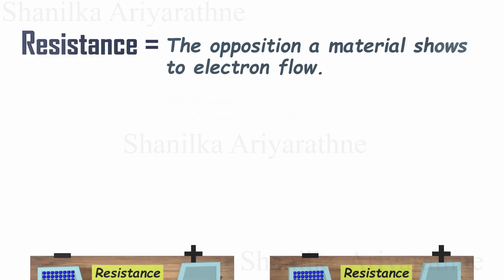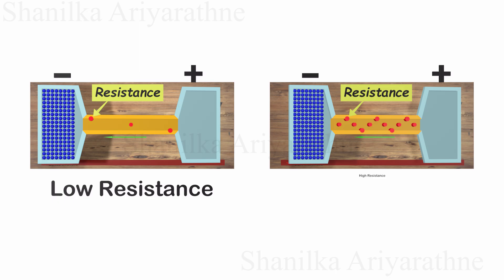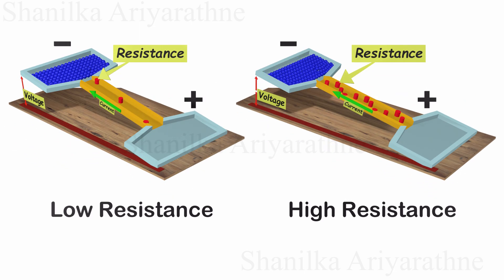If the path has fewer obstacles, the electrons will move quickly from the negative side to the positive side — we call these materials low resistance. However, if there are many obstacles, the movement of electrons slows down, and we call these materials high resistance. So these collisions are what actually cause resistance.